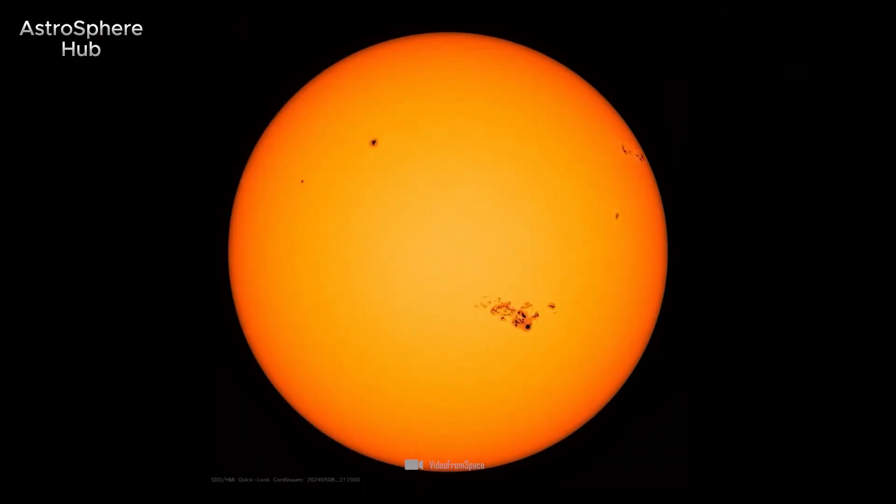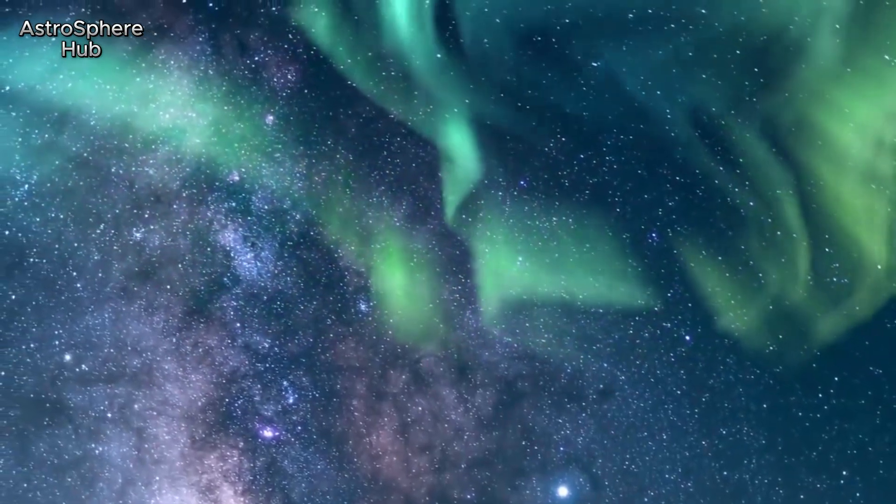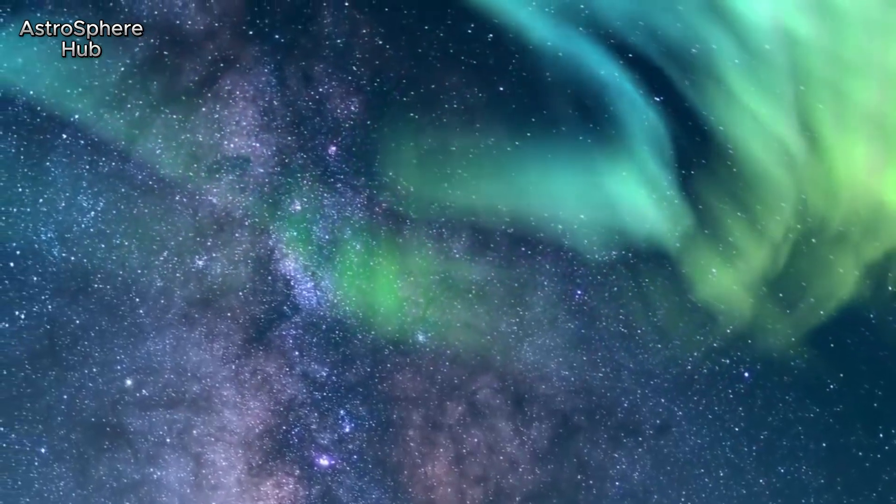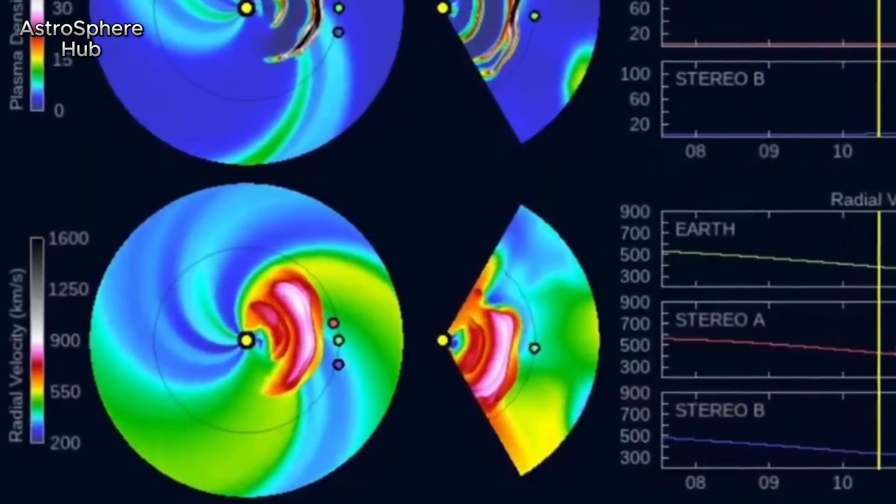The consequences of coronal mass ejections are far more powerful than such coughs. In these events, the sun ejects entire parts of its shell. The streams of charged particles are then more massive but also slower.